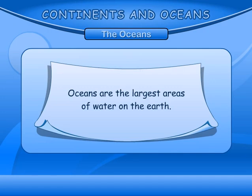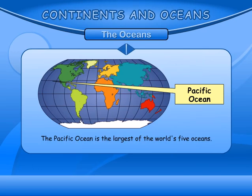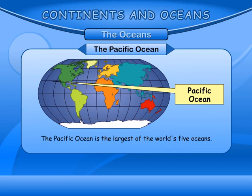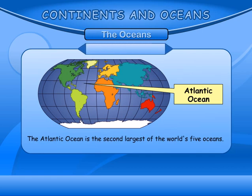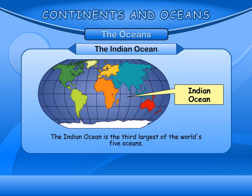Oceans are the largest areas of water on the Earth. The Pacific Ocean is the largest of the world's five oceans. The Atlantic Ocean is the second largest of the world's five oceans.